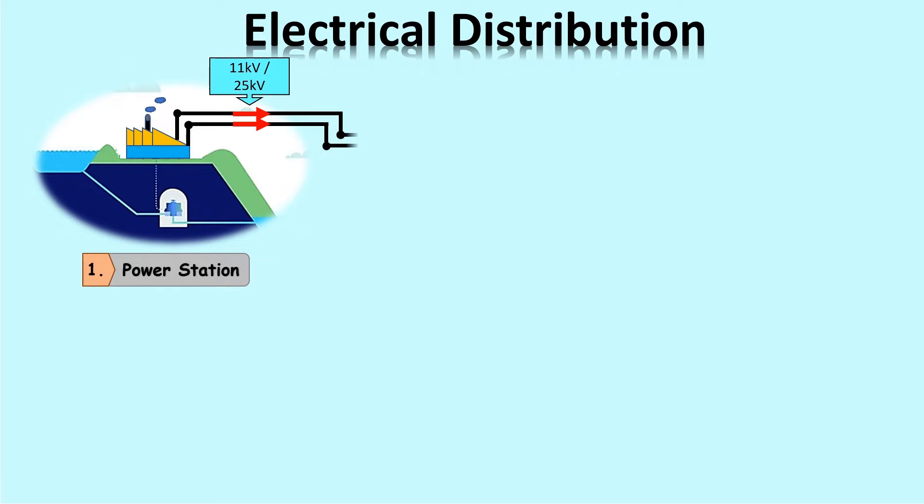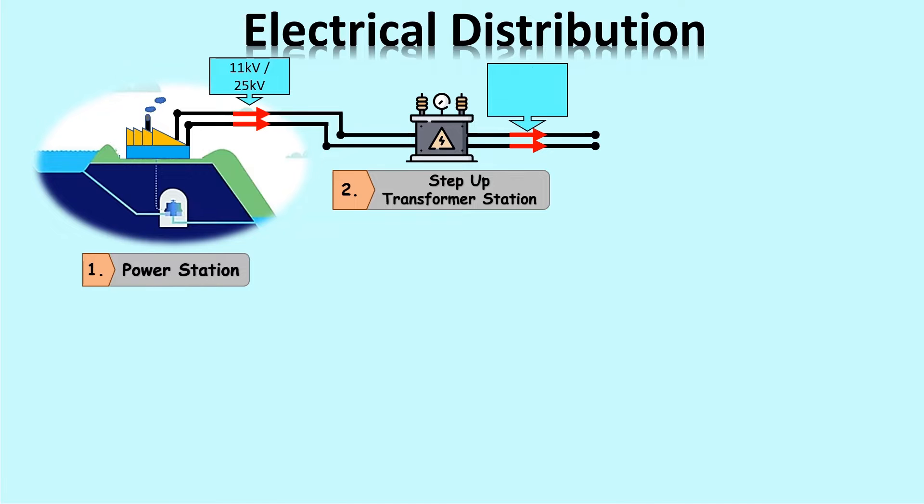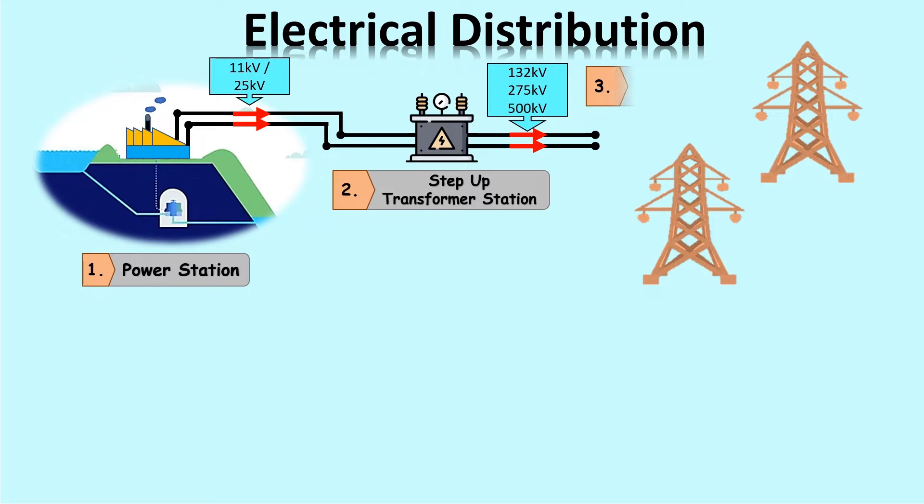This value is considered small to send to the user due to the long distance. Therefore, electricity needs to go through the step-up transformer station first. The energy value that comes out after this station are 132 kilovolts, 275 kilovolts, and 500 kilovolts.